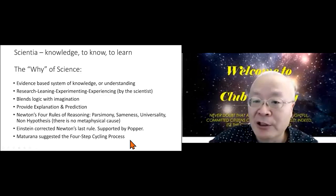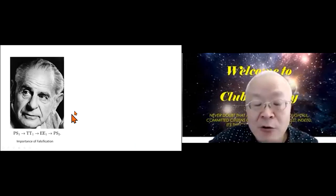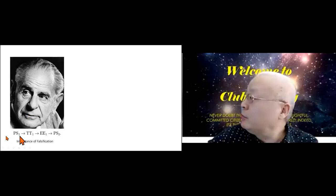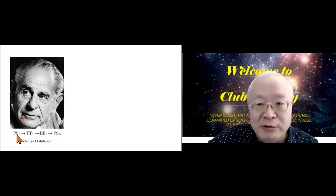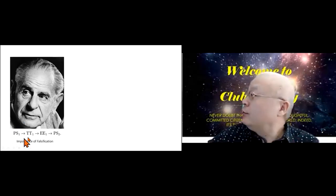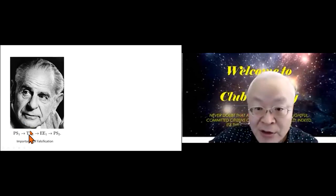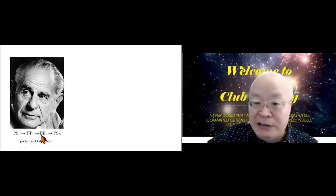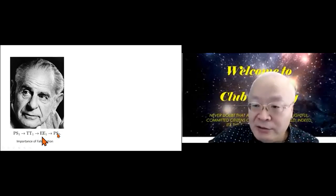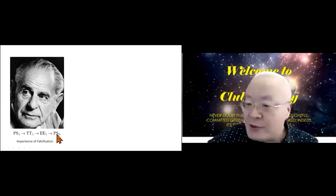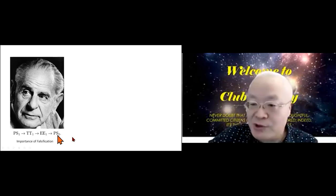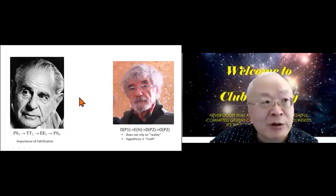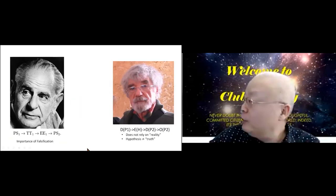We have Maturana suggests the four-step cycling process. At the core of what we call this thing science, Popper says that's problem situation one. When you've got a problem situation one, you've got a tentative theory. You promote your tentative theory and you do your error elimination and then you have your second problem situation. This goes on and on in a circle.